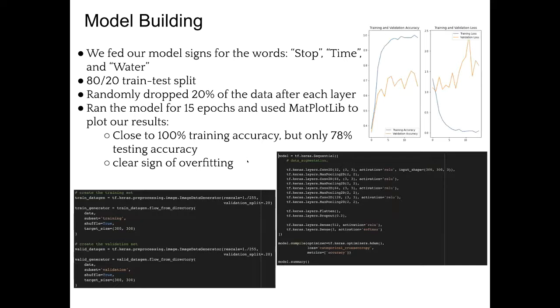For our model building, we fed in the initial three words being stop, time, and water. We used around 80% of the words for the training dataset and 20% of the words for the testing dataset. And after each layer, we dropped around 20% of the data. We ran a model for 15 epochs and used matplotlib to generate the graphs you see in the top right. In the training phase, we got close to 100% training accuracy, but only 78% in the testing phase, which shows overfitting. Overfitting is when the neural network was just memorizing the training data and wasn't able to generalize to the new testing data.